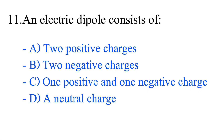Question number 11. An electric dipole consists of: option A, two positive charges; option B, two negative charges; option C, one positive and one negative charge; option D, a neutral charge.